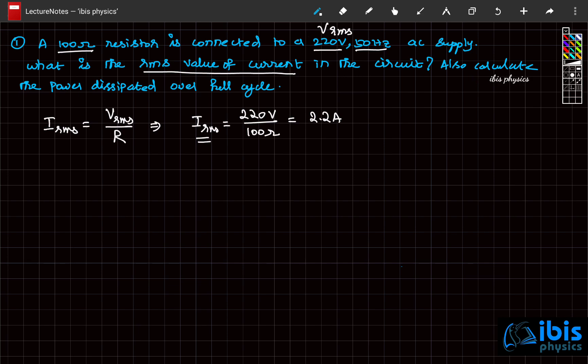The average power dissipated over a full cycle is equal to VRMS times IRMS times cos φ. In a resistor-only circuit, current and voltage are in phase with each other.